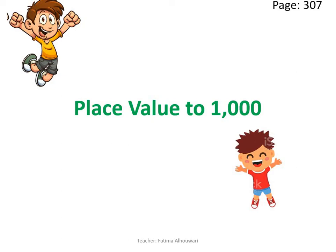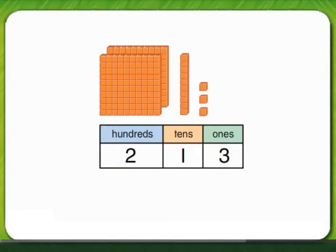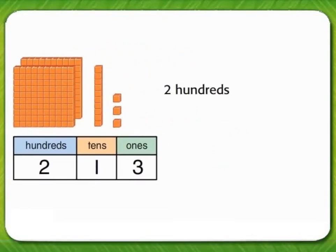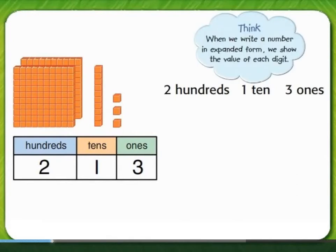As you know, place value tells the value of the digit of the number. Let's start with this example: two hundred thirteen has two hundreds, one ten, and three ones. When we write a number in expanded form, we show the value of each digit.